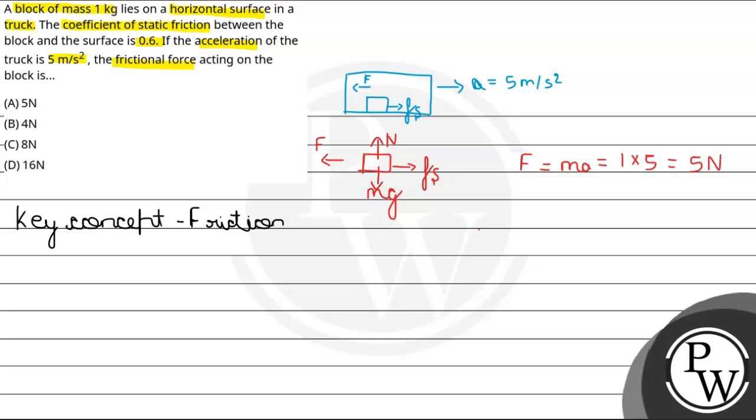And now, we can also write that the normal reaction is equal to mg. So, 1 into 10. So, normal reaction comes out to be 10 Newton.